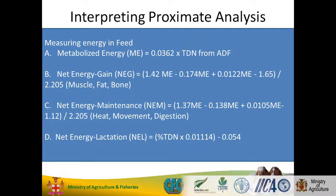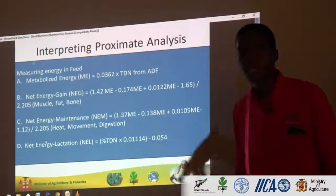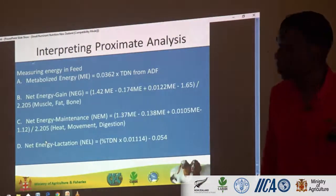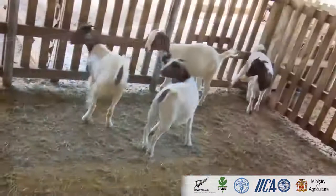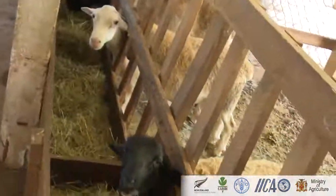Then you look at metabolizable energy using TDN. When you get to TDN, you can see how much energy you're actually getting from that particular forage. You can also look at net energy for gain, net energy for maintenance, and net energy for lactation. These are specifically for sheep and goat — there are other constants for cattle or dairy animals.